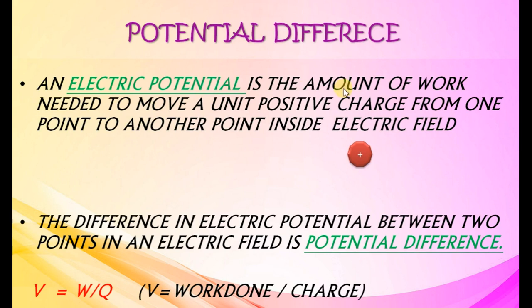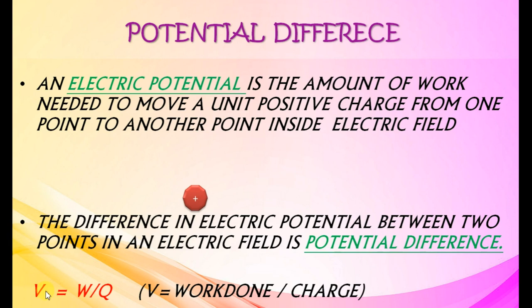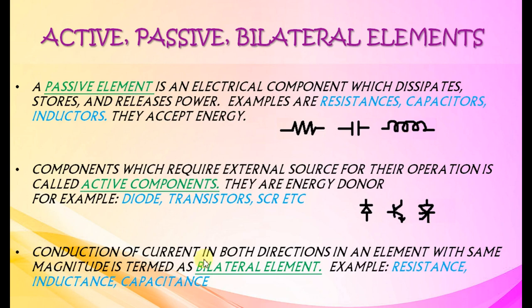The difference in electric potential between two points in an electric field is called potential difference. Potential difference V equals work done by charge.